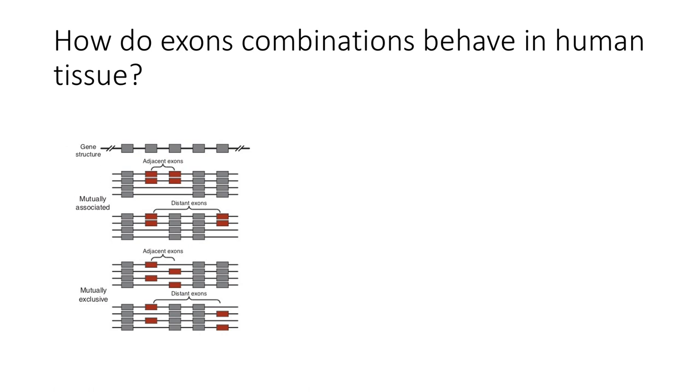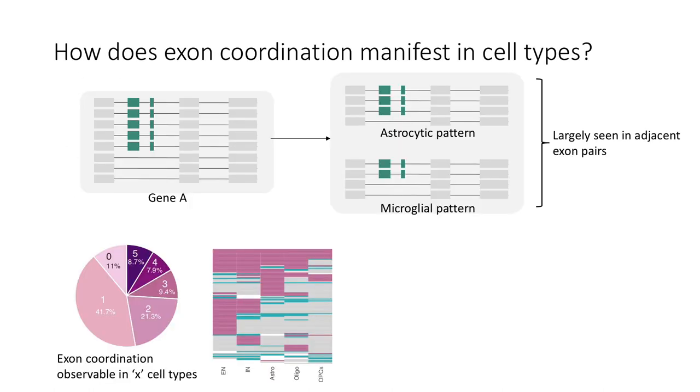We also first have adjacent exons or distant exons and they can either be mutually associated or they can be mutually exclusive. I'm just going to show you a cartoon of what happened. So if you see exon coordination patterns in pseudobulk, what we often find is that those same patterns are recapitulated in different cell types maybe to different degrees. And this is a pie chart showing how many cell types an exon coordination pattern is observed.